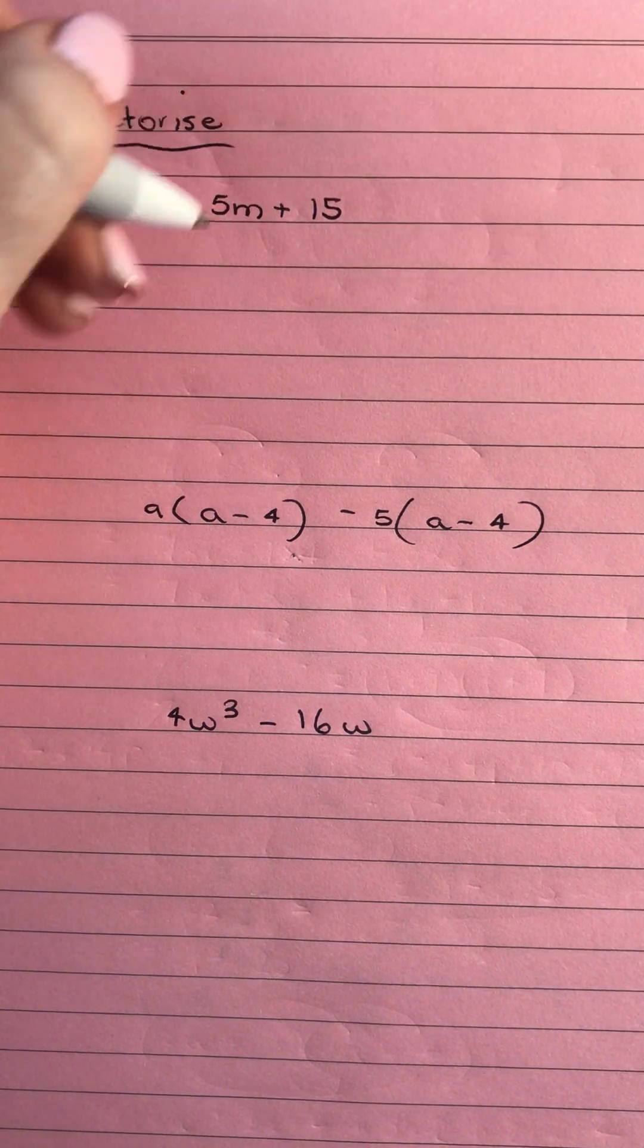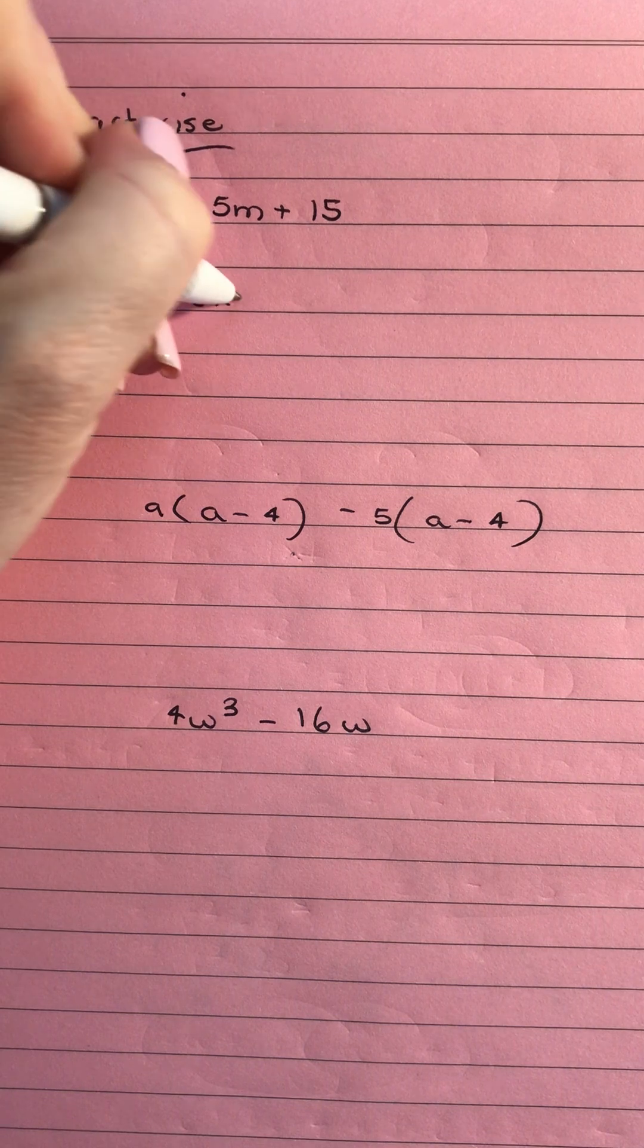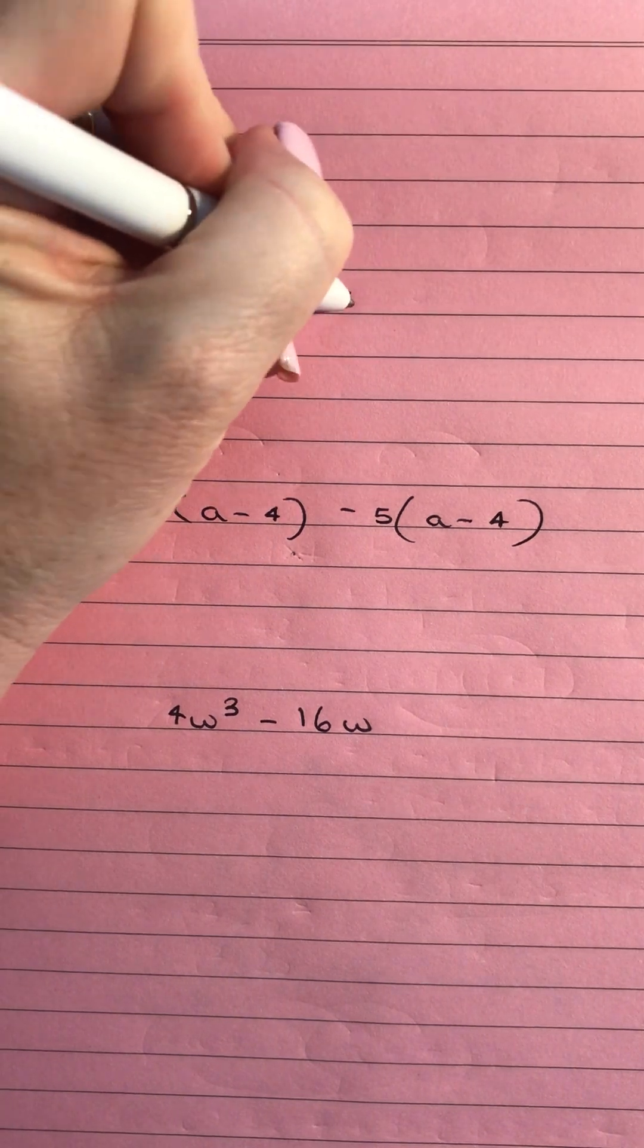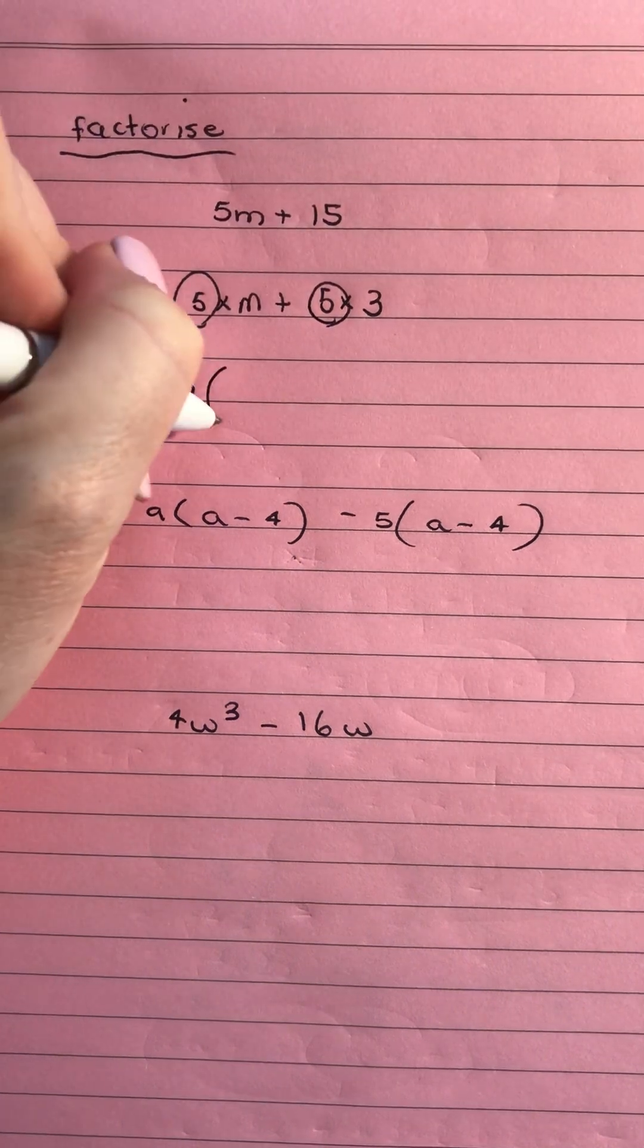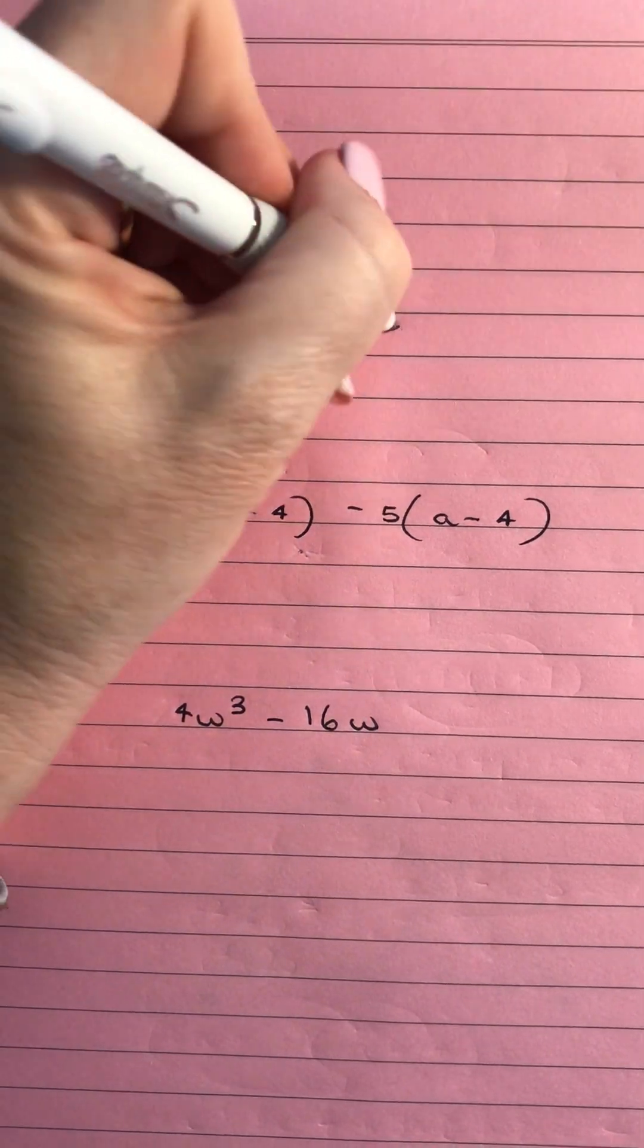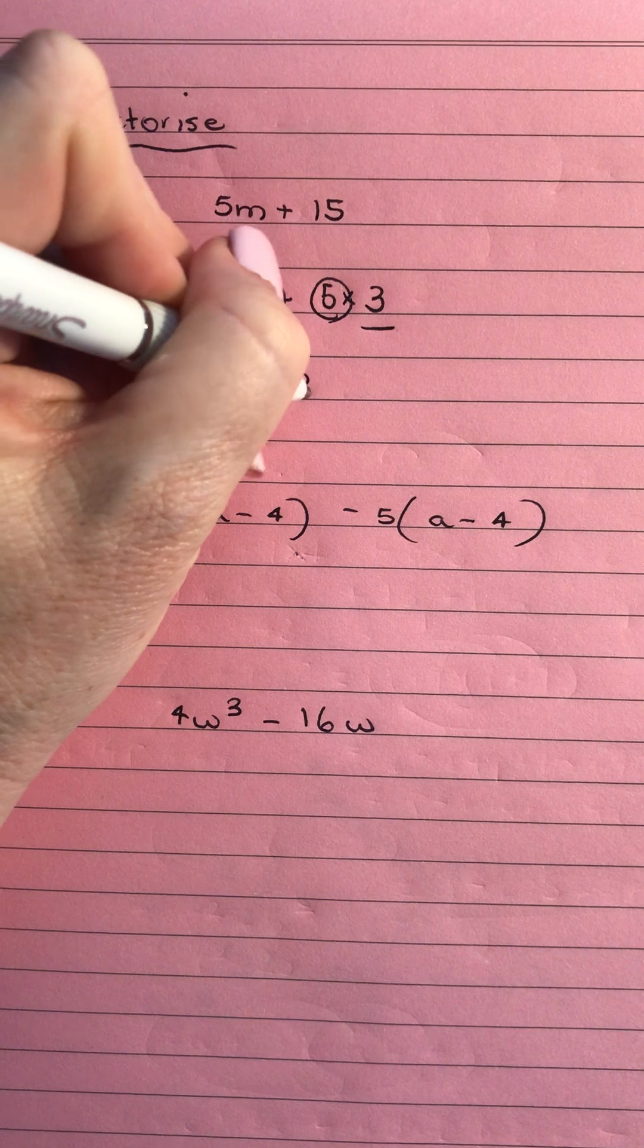So here we've got 5m plus 15. I'm going to write that as 5 times m plus 5 times 3. I can circle the 5, that goes out the front and in my bracket goes the leftover m plus 3.